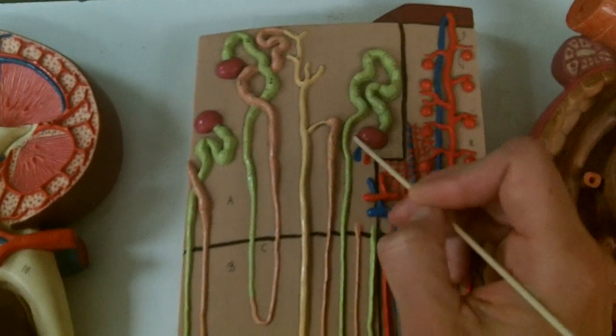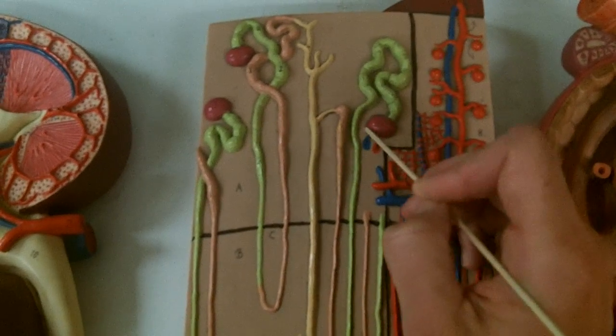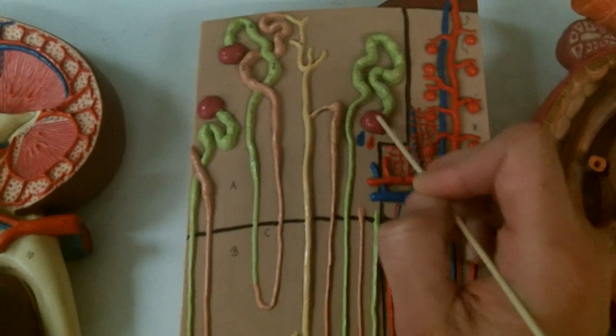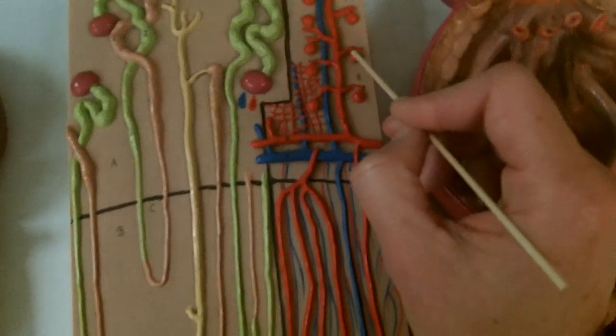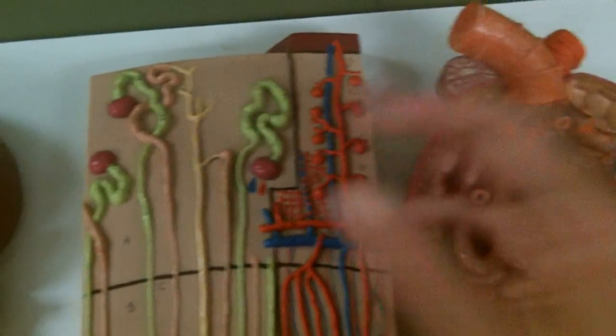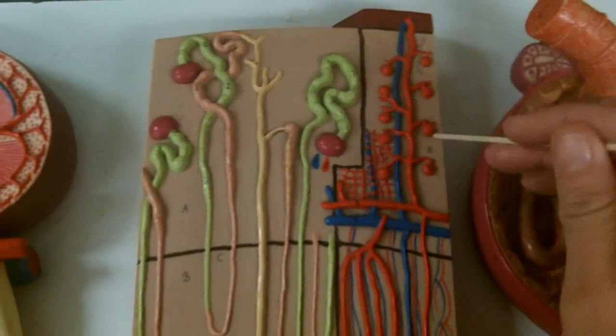Now again we can see the renal corpuscle, so this is the glomerular capsule and there is a glomerulus inside. Over here they're showing you the glomeruli out of the renal glomerular capsule.